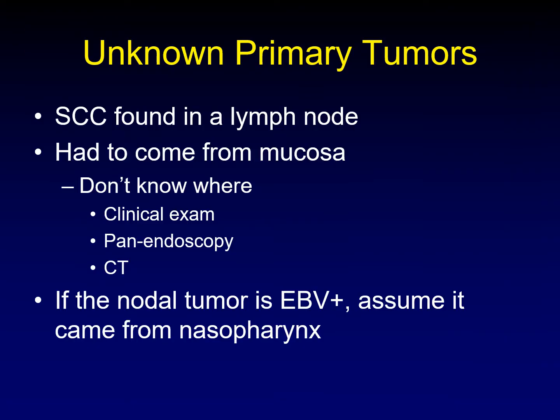Let's take a moment to discuss unknown primary tumors. An unknown primary tumor occurs when squamous cell carcinoma is identified in a lymph node under fine needle aspiration or excisional biopsy. We know that squamous cell carcinoma doesn't arise in lymph nodes — it had to come from the mucosa somewhere, but we don't know where. We do a clinical examination, panendoscopy, and CT, but none of those identify where that primary tumor is located. Now it's called an unknown primary tumor.